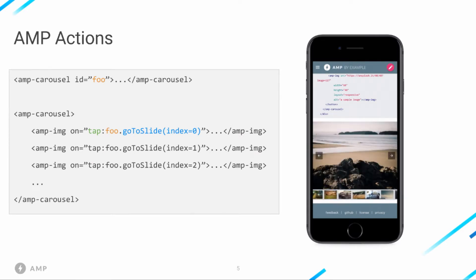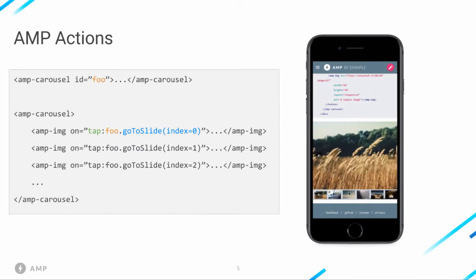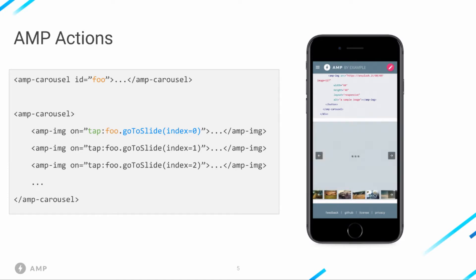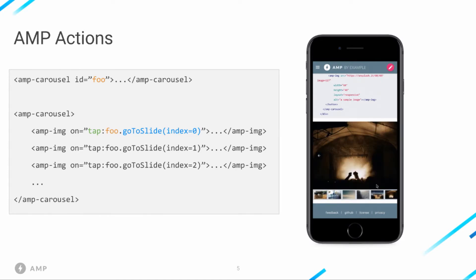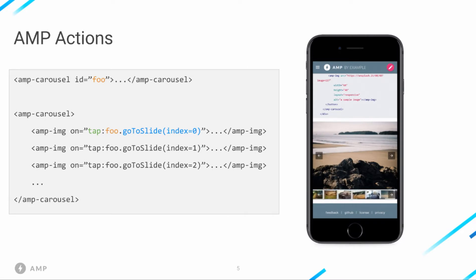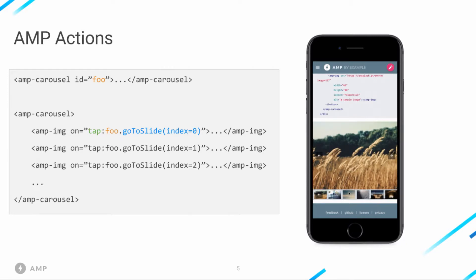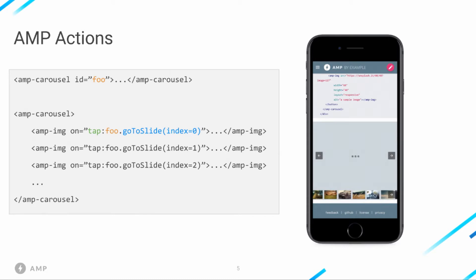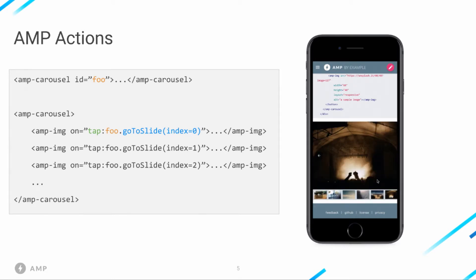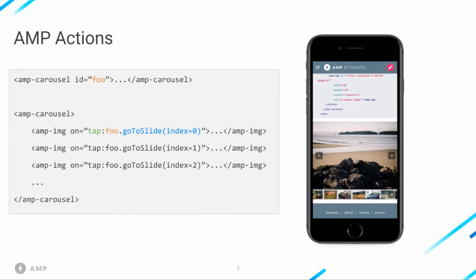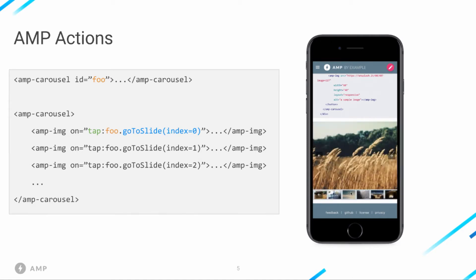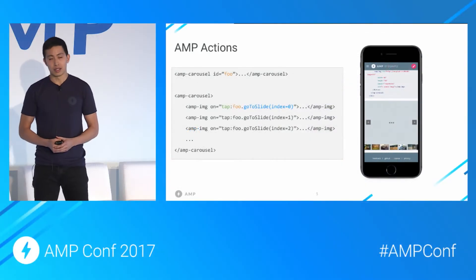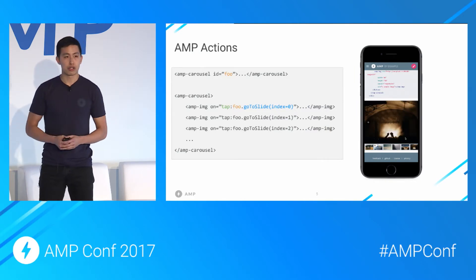This is a slightly more complex example showing a common use case you may see on the web today. We have two image carousels, a large one and a small one showing thumbnails, where tapping on an image on the smaller carousel updates the display on the larger carousel. Each image in the smaller carousel has its own action where, on tap, it calls the go-to-slide action on the larger carousel with the ID foo, with the index of the corresponding image. This method works, but it's not ideal because of the duplication of the action markup.